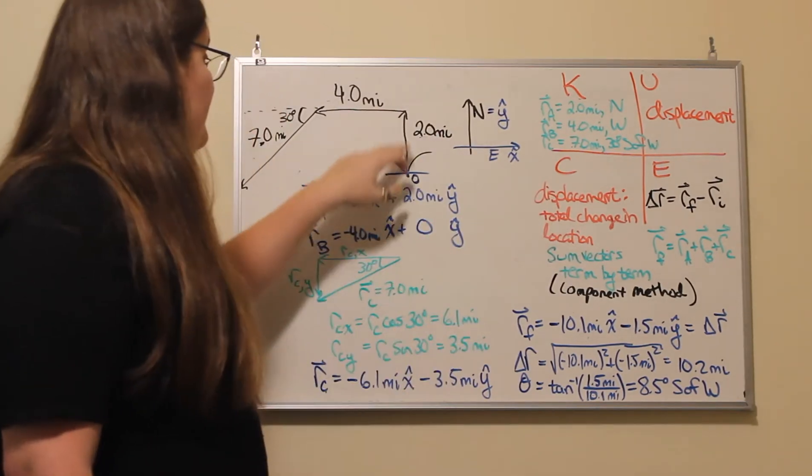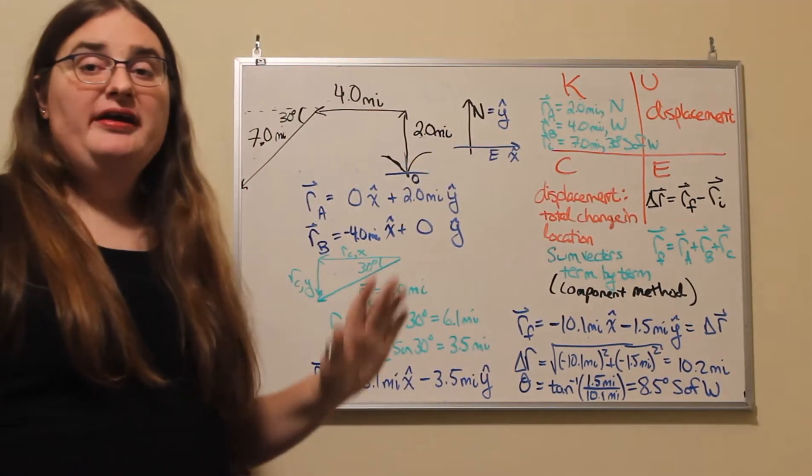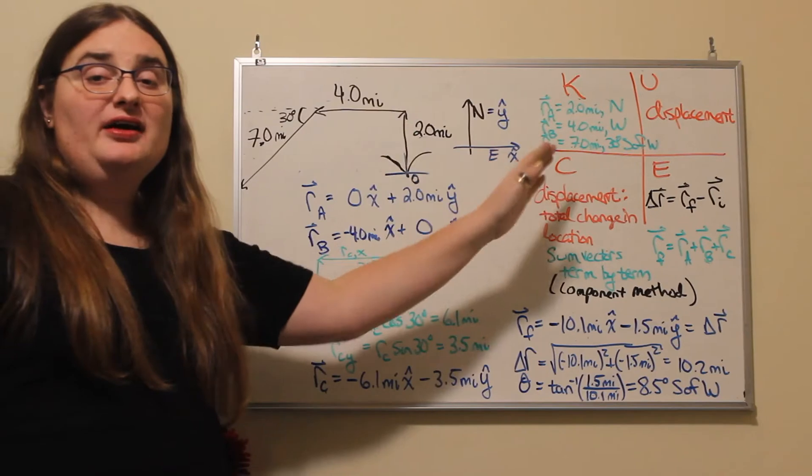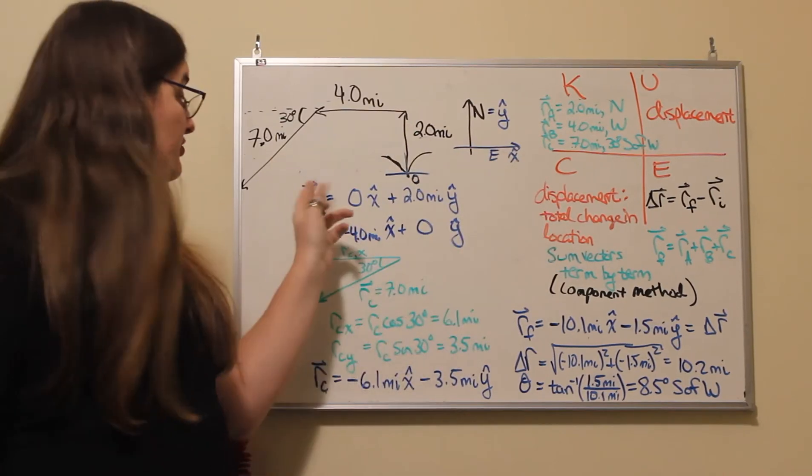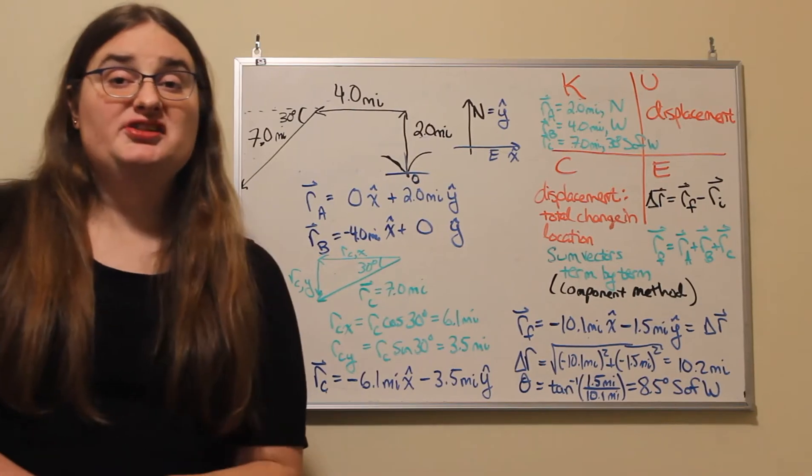So if I take my first displacement, two miles to the north, there's no x component. If we're just going north, we're not going east or west. So I have nothing in the x component plus two miles in the y component.